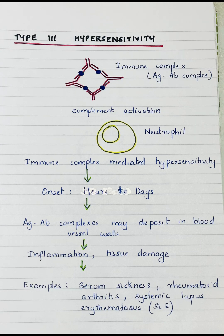Type 3 hypersensitivity reaction. It is also called immune complex-mediated hypersensitivity, because it is mediated by immune complexes — i.e., antigen-antibody complexes. The reaction occurs within hours to days after exposure to the antigen. The antigen-antibody complexes may deposit in the blood vessel walls, leading to inflammation and tissue damage. Examples include serum sickness, rheumatoid arthritis, and systemic lupus erythematosus.